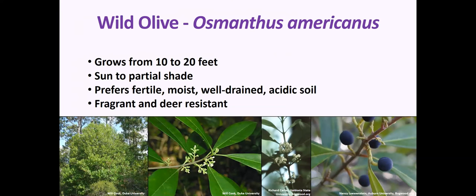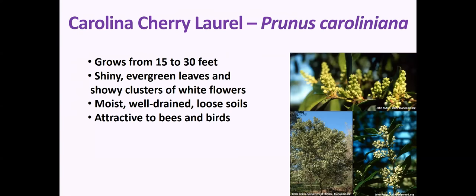Wild olive can grow 10 to 20 feet high and will be happy in sun to partial shade. It prefers fertile, moist, well-drained, acidic soils. It has small white flowers that are very fragrant and also provides berries for wildlife later in the year. Carolina cherry laurel grows from 15 to 30 feet high. It's an evergreen with shiny, waxy leaves and showy clusters of white flowers — the whole tree will look nearly white when it's blooming. It prefers moist, well-drained, loose soils and is attractive to both birds and bees.